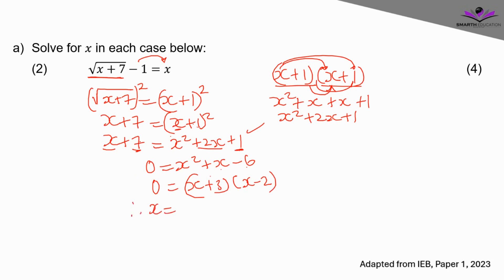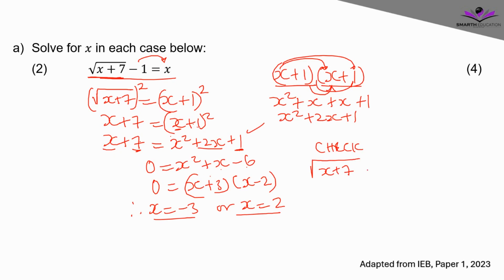Therefore x = −3 or x = 2. With a surd equation, remember to check your answers. Substituting x = −3 into the original equation doesn't work — you won't get −3 on both sides, so it's not applicable. Substituting x = 2: √(2 + 7) = √9 = 3, and 3 − 1 = 2, which matches. So x = 2 is the valid solution.